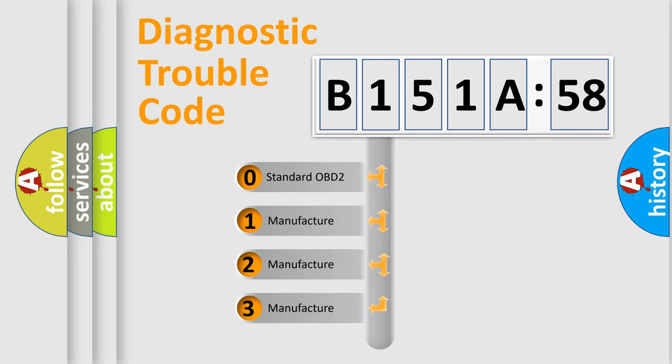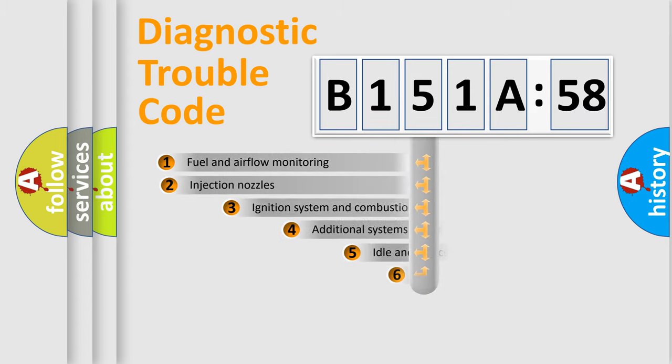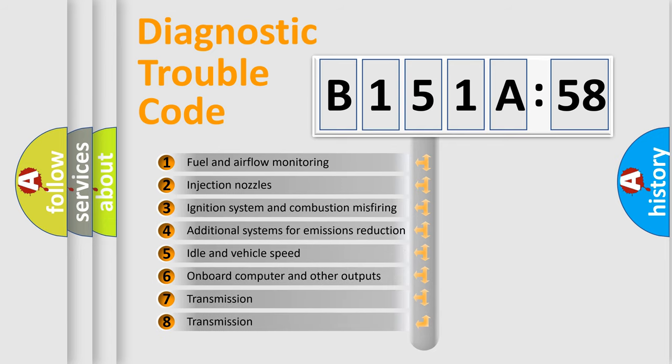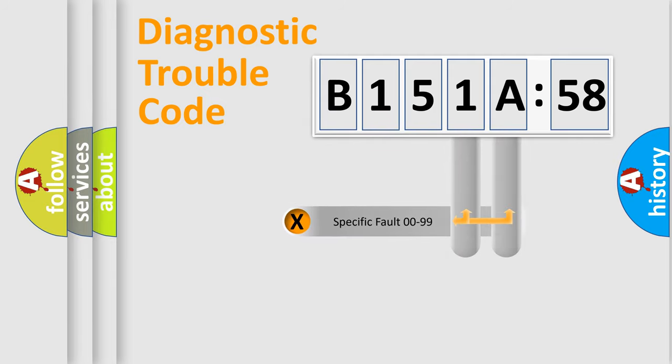If the second character is expressed as zero, it is a standardized error. In the case of numbers 1, 2, or 3, it is a manufacturer-specific expression of the car-specific error. The third character specifies a subset of errors. The distribution shown is valid only for the standardized DTC code. Only the last two characters define the specific fault of the group.